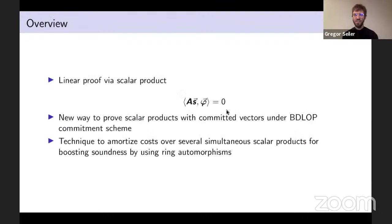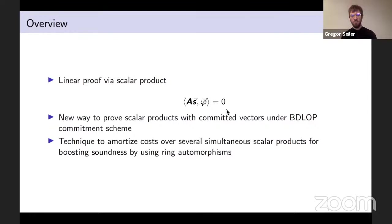If the goal is only to prove linear relations, this can be quite easy with the BDLOP commitment scheme, but the hard part is if you also want to do product proofs. Our linear proof works for a particular version of the BDLOP commitment scheme that allows for efficient product proofs. The first main technique in our paper is a new way to prove scalar products with committed vectors under the BDLOP commitment scheme.